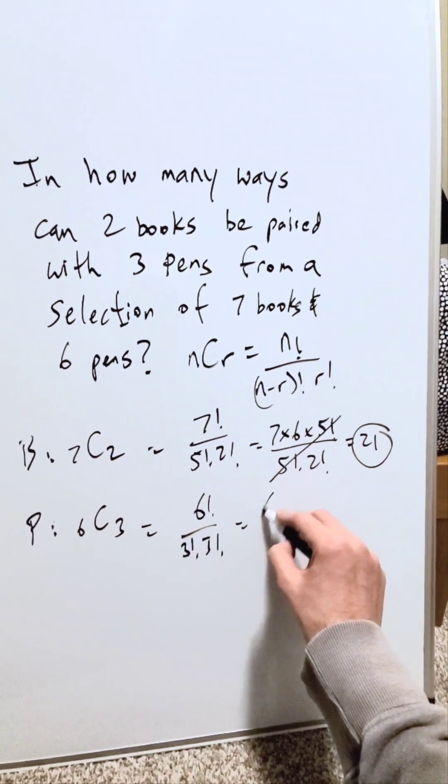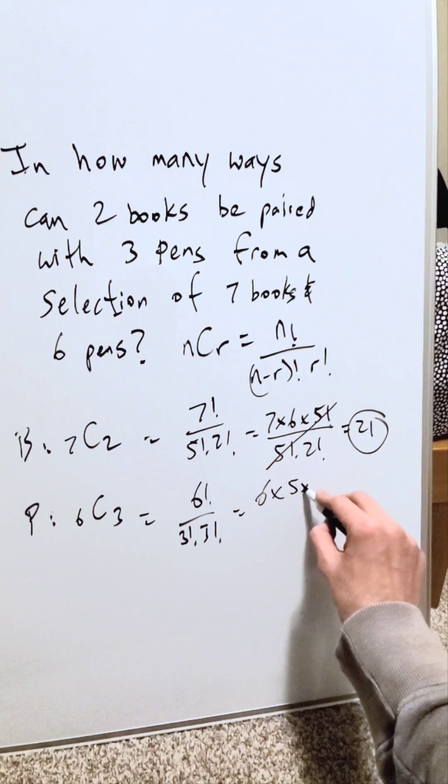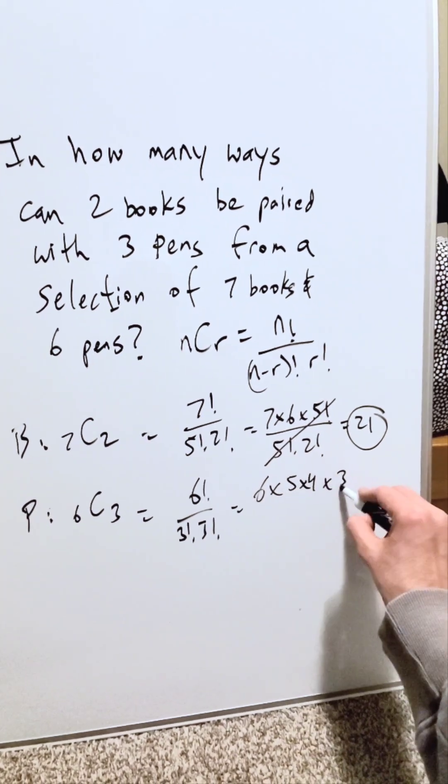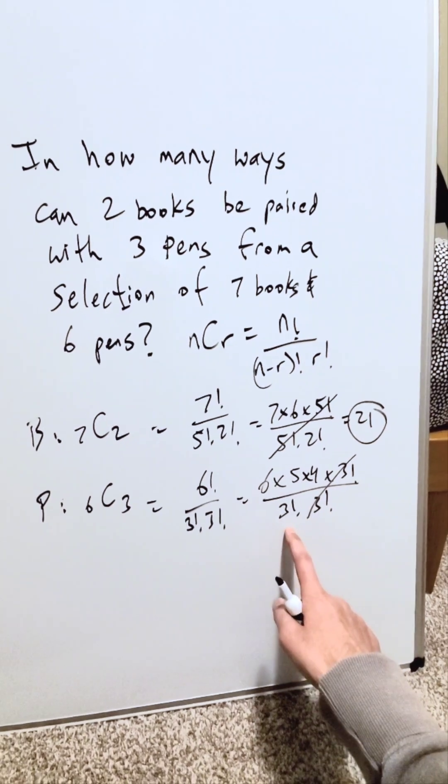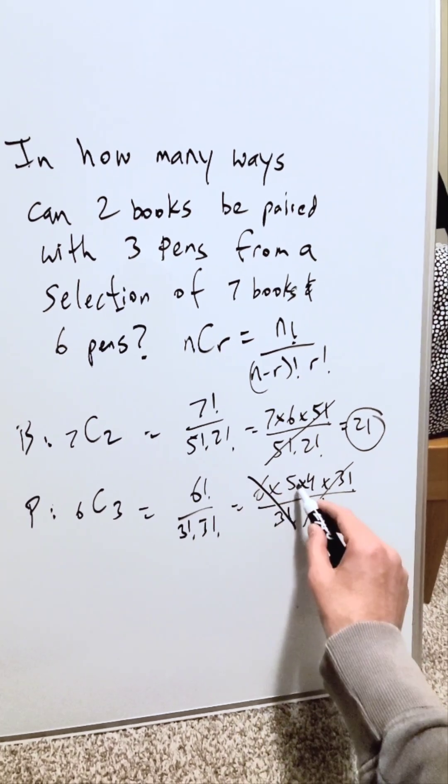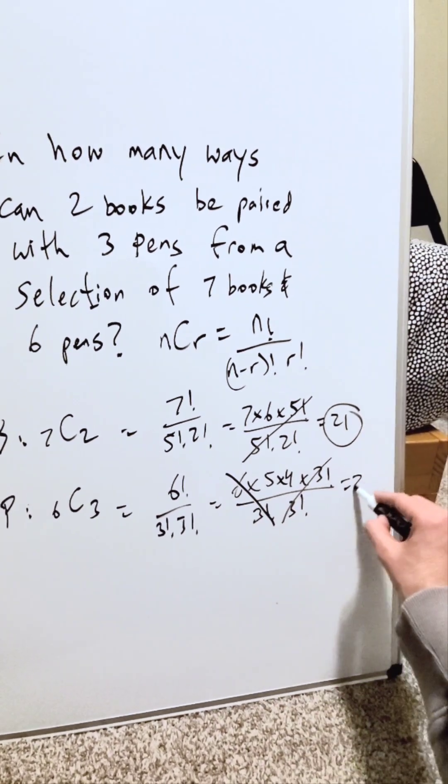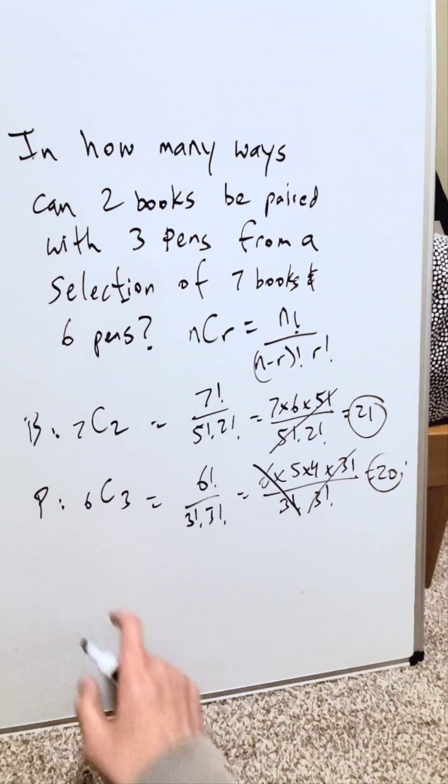Now with pens. Six factorial, write that six times five times four times everything after that, three factorial. I have three factorial, three factorial. These will cancel out. Three factorial is equal to six. This cancels out. I'm left here with five times four, and that right here is 20. Twenty ways with regards to pens.